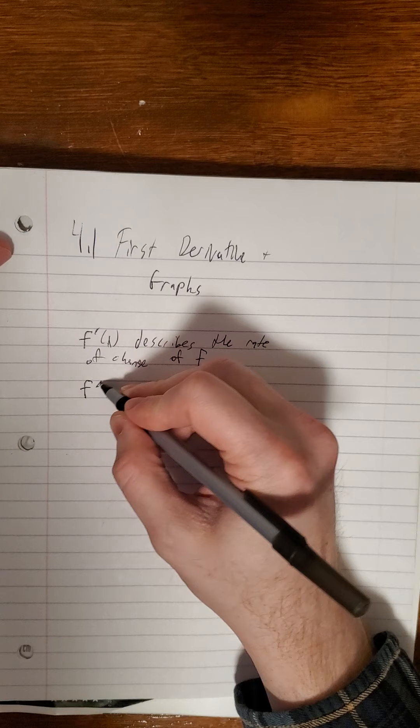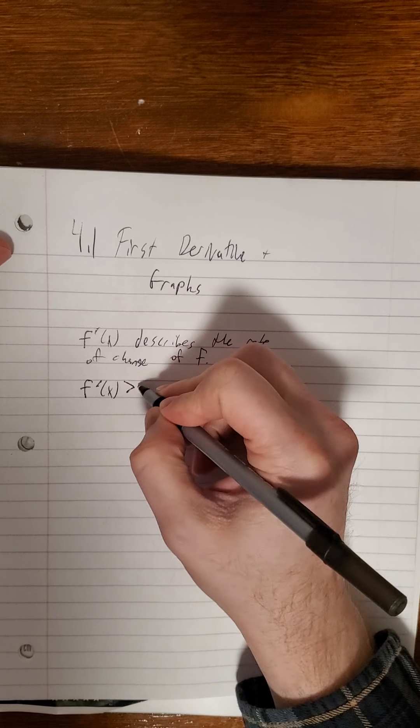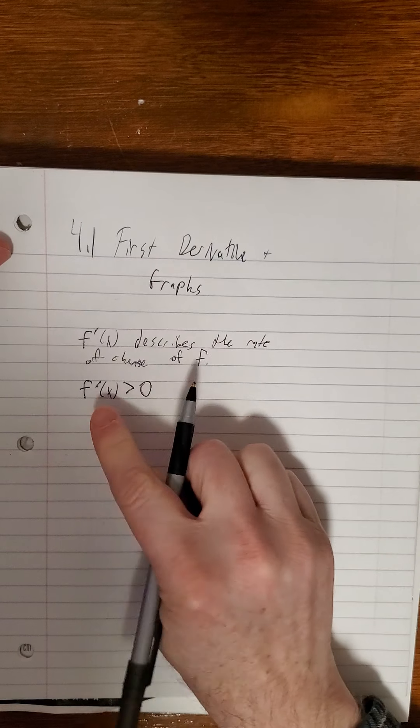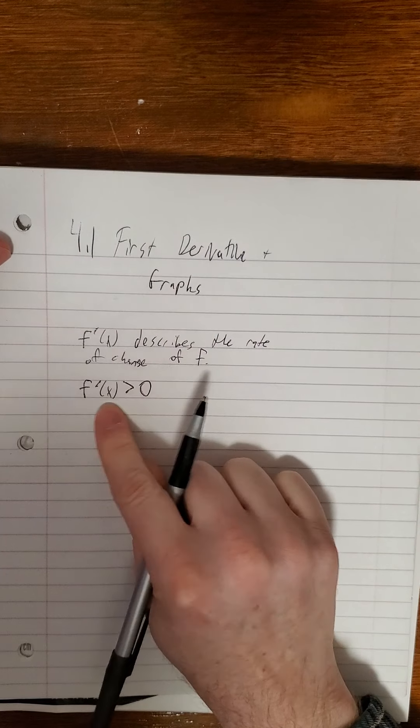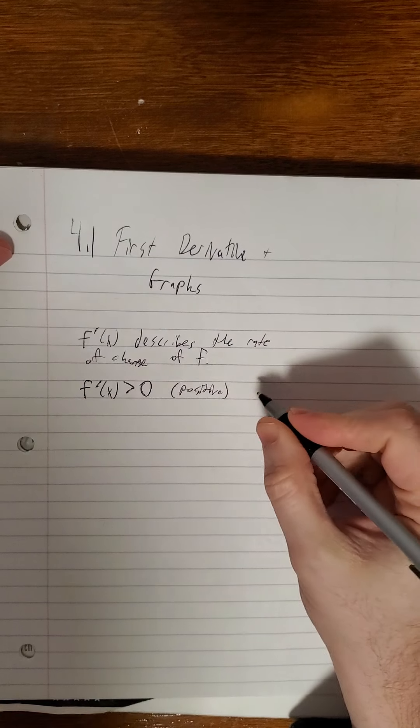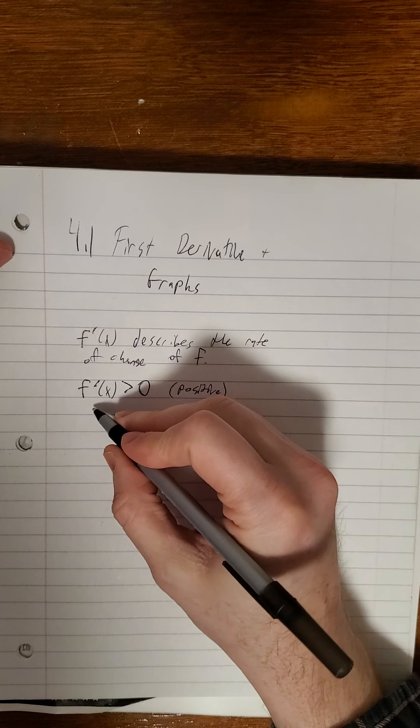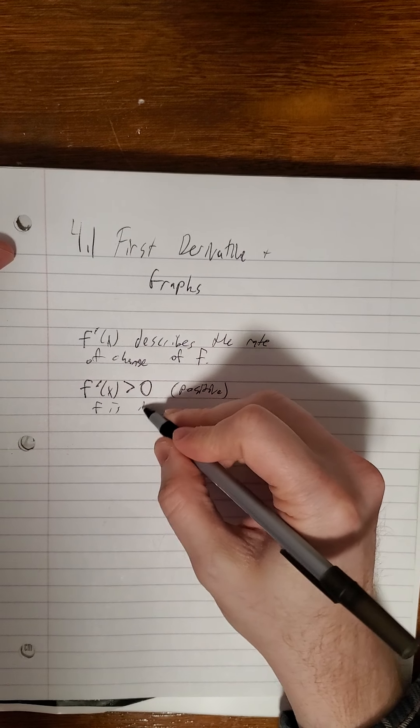Well if we have f prime of x greater than zero, I think what this means, this means positive. This tells us that f is increasing.